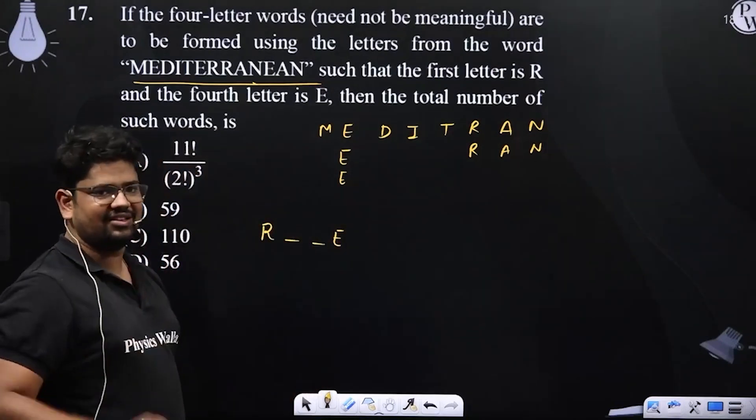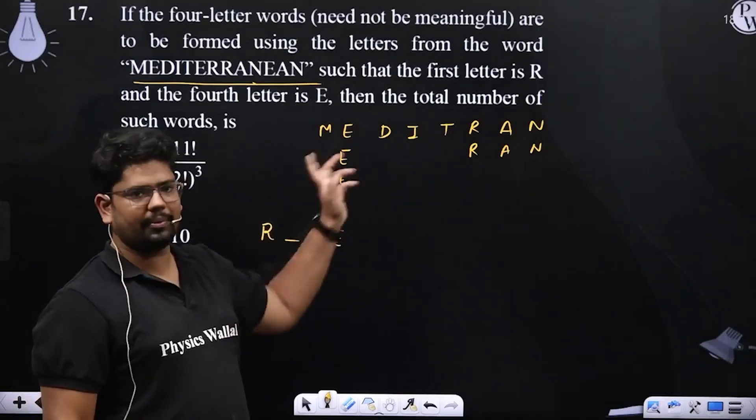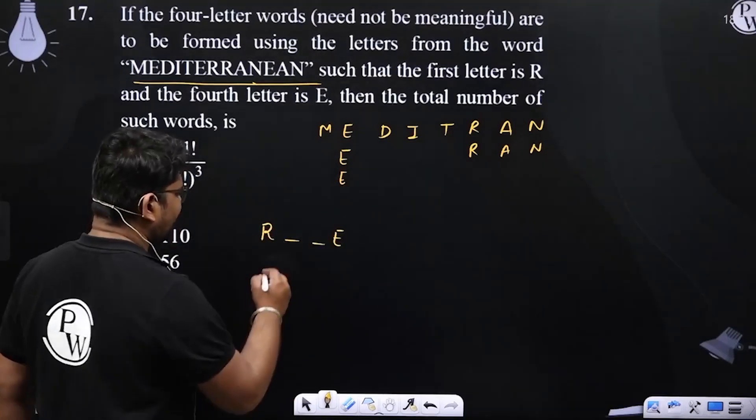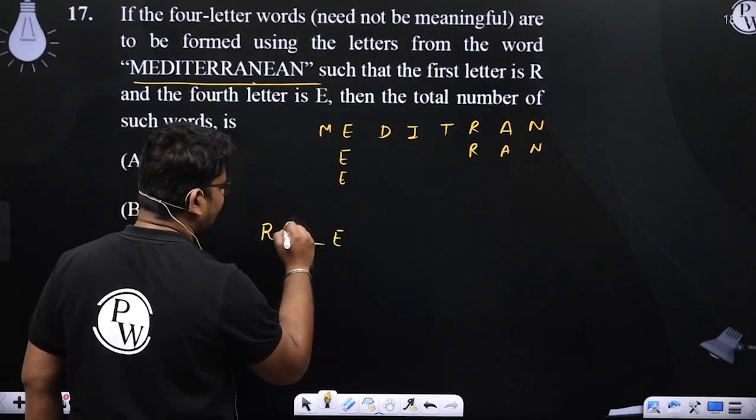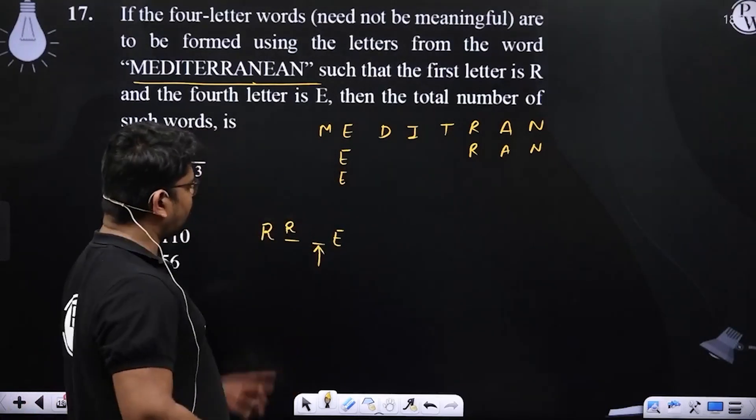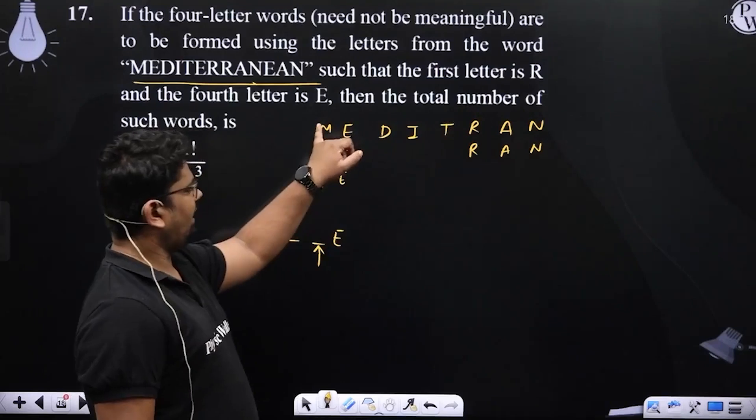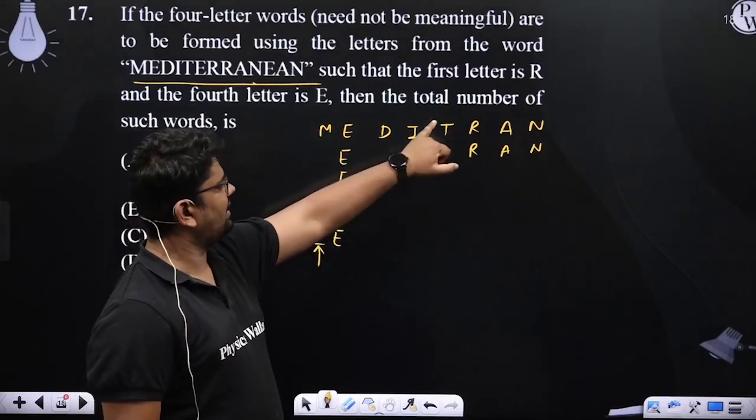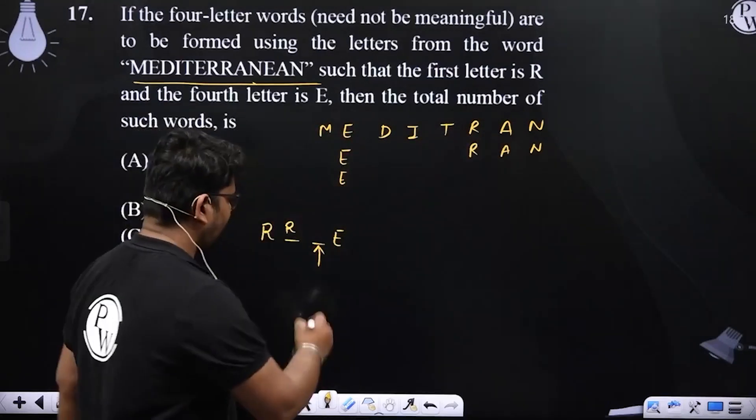Now I have different cases. R and E are involved. First I am going to write here if R is R. So this place has two Rs, both of them are done. We can write E, D, I, T, A, N. So the choice is 7.